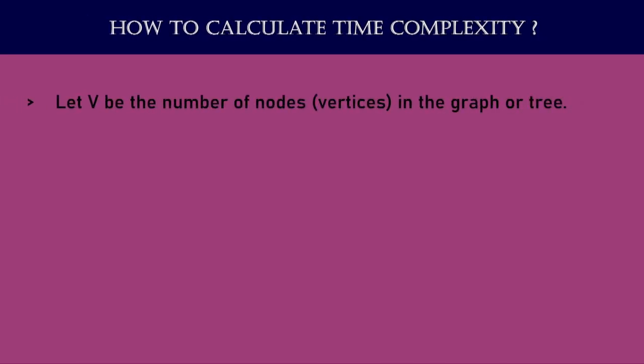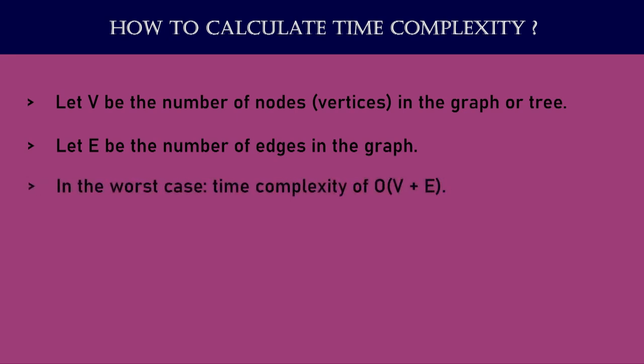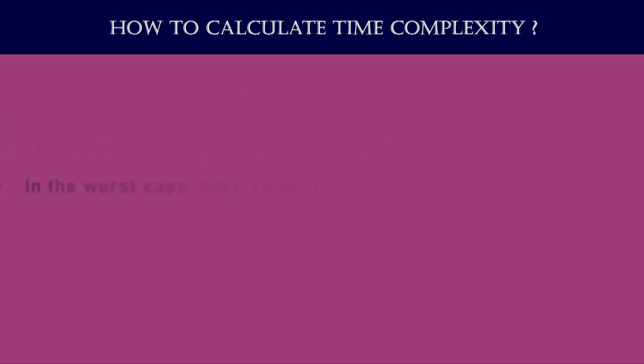Time and space complexity of depth first search: the time and space complexity of DFS depends on several factors including the structure of the graph or tree, the branching factor, and the depth of search. Let V be the number of vertices and E be the number of edges. In the worst case, DFS may visit all nodes and traverse all edges, resulting in a time complexity of O(V + E). The actual time complexity can vary depending on the order in which nodes are visited and the presence of cycles.